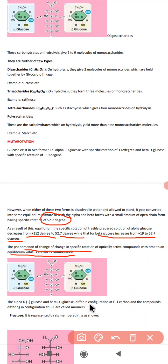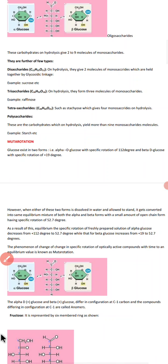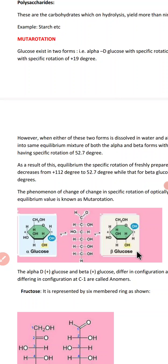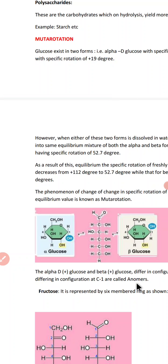Alpha-D-glucose decreases in specific rotation from +112° to +52.7°, while beta-D-glucose increases from +19° to +52.7° at equilibrium. Alpha-D-glucose and beta-D-glucose differ in the configuration at carbon one; the OH group points downward in alpha and upward in beta. Because they differ in configuration at carbon one, they are called anomers.